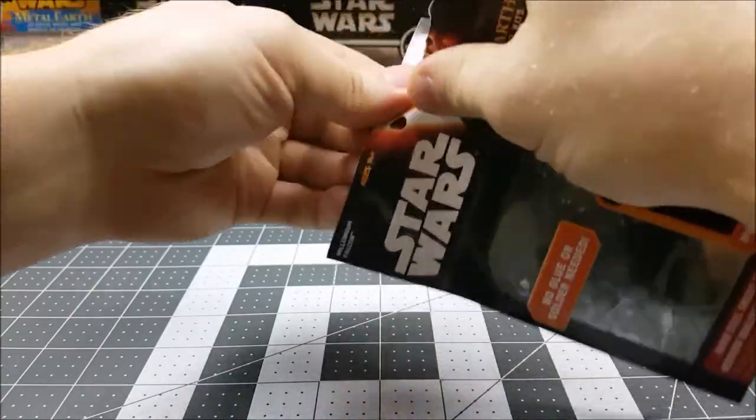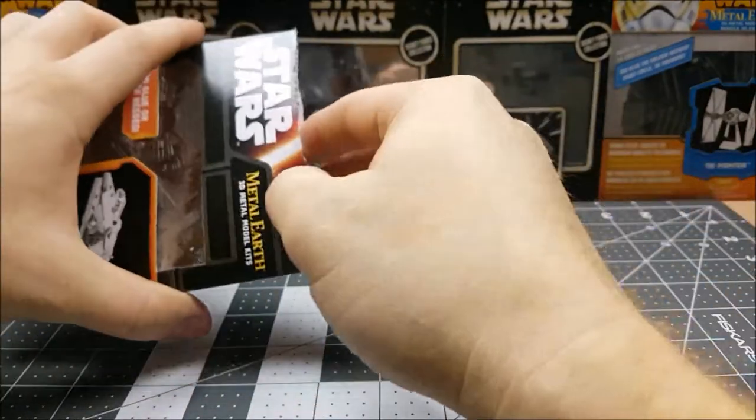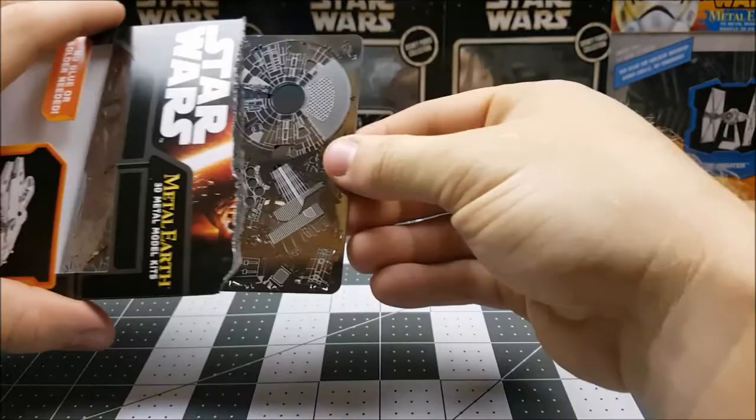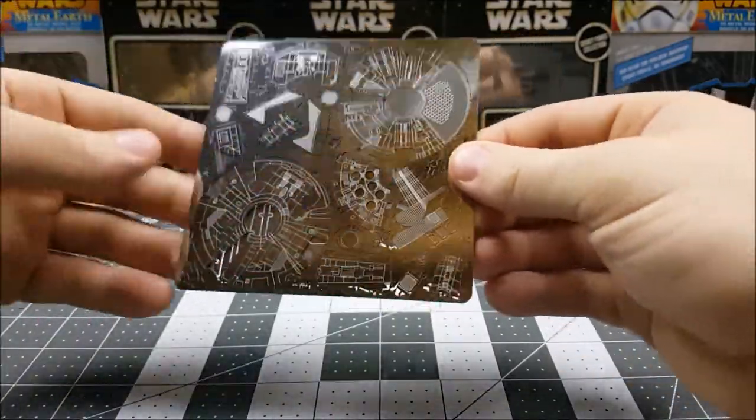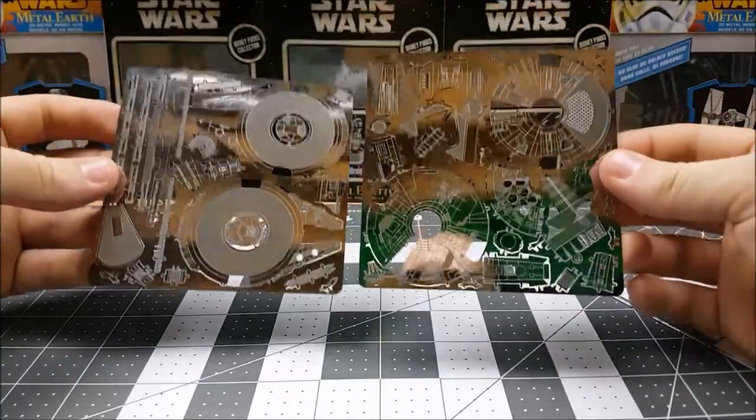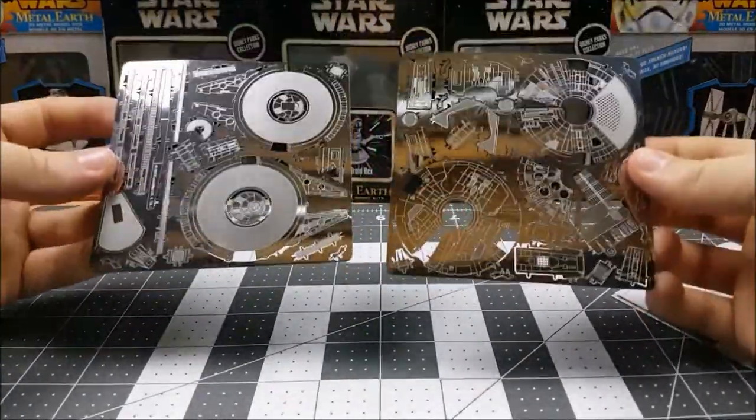Groovers, let's get started by ripping open this package here. The first thing we're going to see are the instructions, and then our metal. What looks really nice about this metal is they took the time to get the laser etching detail correct. I can't wait to see what this is going to look like when we're all done.